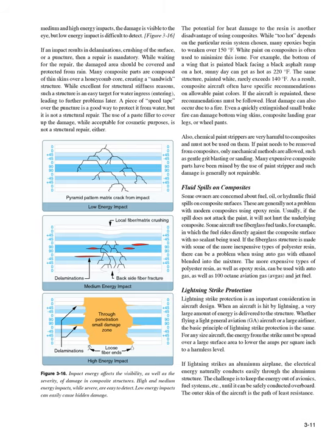High-energy impacts, while severe, are easy to detect. Low-energy impacts can easily cause hidden damage. The potential for heat damage to the resin is another disadvantage of using composites. Many epoxies begin to weaken over 150 degrees Fahrenheit. White paint on composites is often used to minimize this issue. For example, the bottom of a wing painted black facing a black asphalt ramp on a hot, sunny day can get as hot as 220 degrees Fahrenheit. The same structure, painted white, rarely exceeds 140 degrees Fahrenheit. As a result, composite aircraft often have specific recommendations on allowable paint colors. If the aircraft is repainted, these recommendations must be followed.